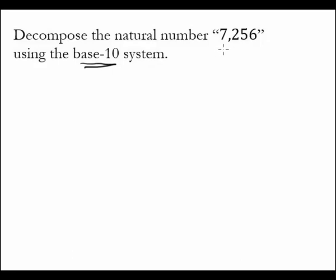Well, we know that the 7 is representing 7,000, we know that the 2 is representing 200 because it's in the hundreds place, we know that the 5 is representing 50, and the 6 is just representing 6. So we have 7,256.